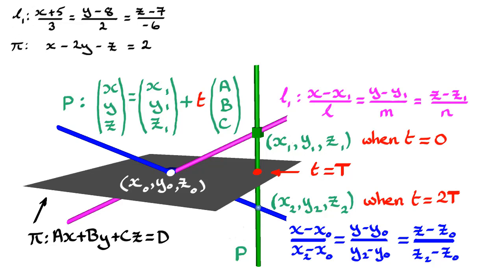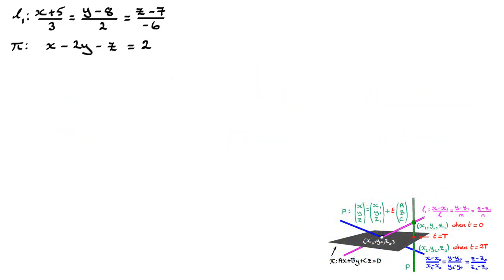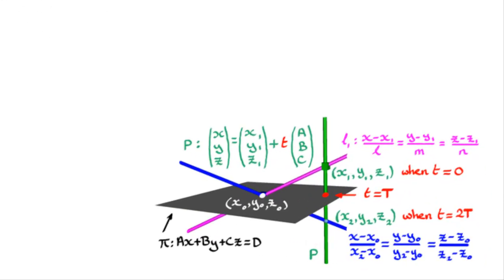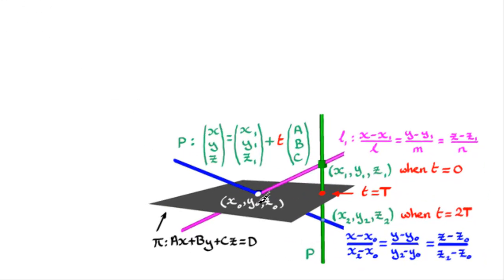So what I'll do now is reduce this method to give me space to work out the solution to this problem. We have the equation of L1: (x + 5)/3 = (y − 8)/2 = (z − 7)/(−6), and the plane pi: x − 2y − z = 2. So the first thing I want to do is find the point of intersection between the line L1 and the plane pi.